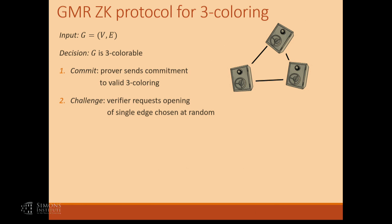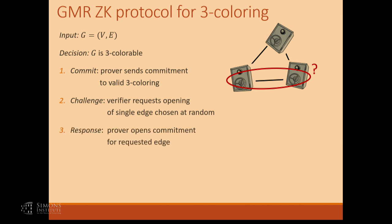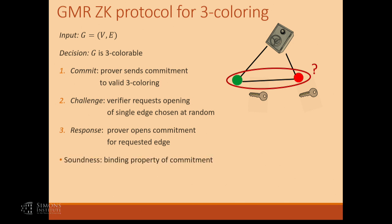The prover obliges and reveals the keys that open the commitments. The verifier opens the commitment and checks that it sees two distinct colors along the edge. Why is this protocol sound? If the colors do not correctly color at least one of the edges, there's always a small chance that the verifier would choose that edge and challenge the prover for it — and the prover would get caught. This gives low soundness; if you want better soundness, you'd repeat the protocol multiple times.